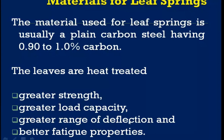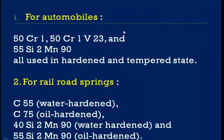The load-carrying capacity of the leaf spring is increased through heat treatment processes such as tempering, annealing, and nitriding. A greater range of deflection ensures proper spring functioning for shock absorption. All these desirable properties — strength, load-carrying capacity, range of deflection, and fatigue resistance — are obtained through the heat treatment process.